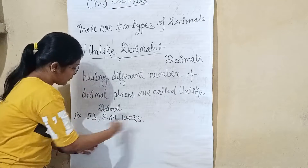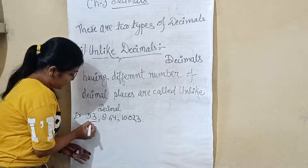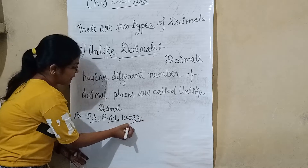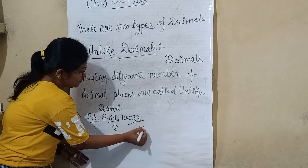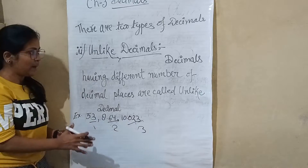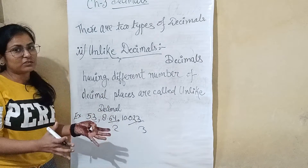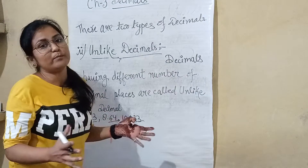Looking at the decimal places: the first has 1, the second has 2, the third has 2 — they are not equal. So this is the unlike decimals method. Unlike decimals can also be shown in ascending or descending order.